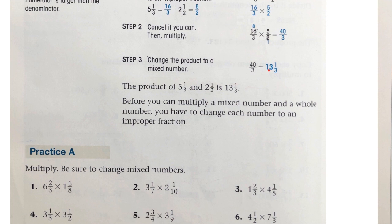You can get 13 3's into 40 with 1 left over out of 3. The product of 5 and 1/3 and 2 and a half is 13 and 1/3.